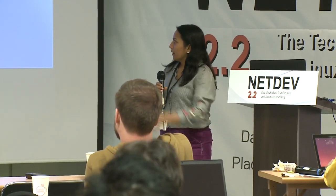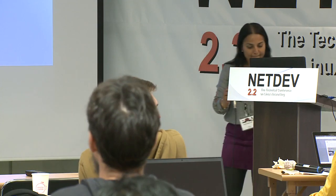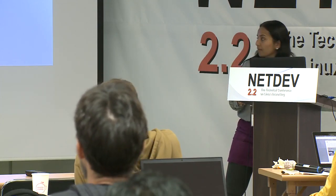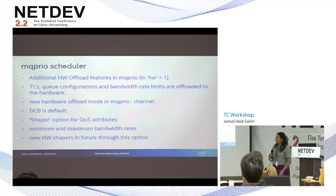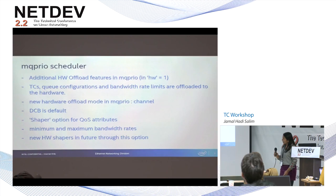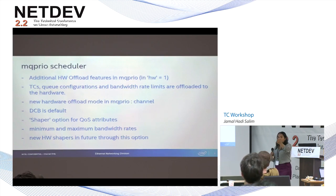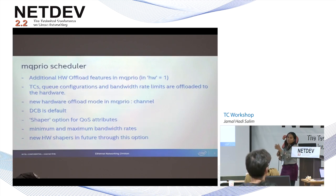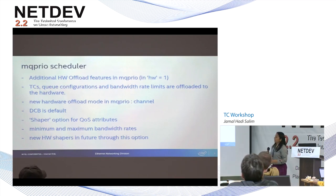My name is Anjali Singhai-Jain and I'm presenting on behalf of my colleagues. This is work that has already gone into the kernel. There were changes to the MQPRIO scheduler to get more hardware offload. John had done earlier hardware offload support for MQPRIO TC offloads, and this builds a little more on it — offloading the Q configuration and bandwidth rate limits into hardware.